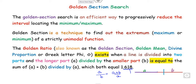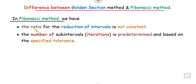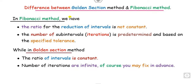How is it different from Fibonacci? In the Fibonacci method, the ratio of the interval is not constant — that is, f(n-2) upon f(n) changes as n changes. Also, you need to know the value of n before finding the maximum or minimum using Fibonacci. While in golden section, the ratio is a constant, and the number of intervals can be taken as infinite, or fixed in advance.